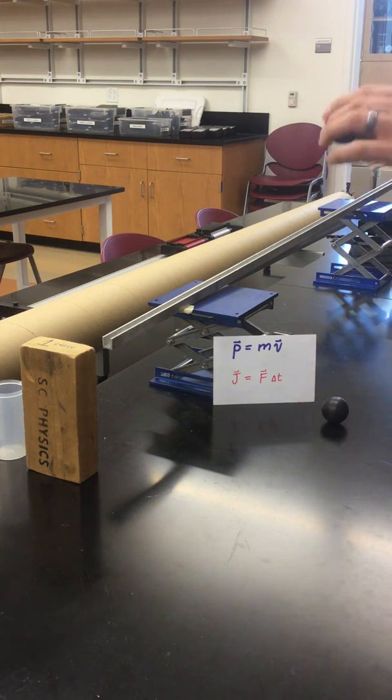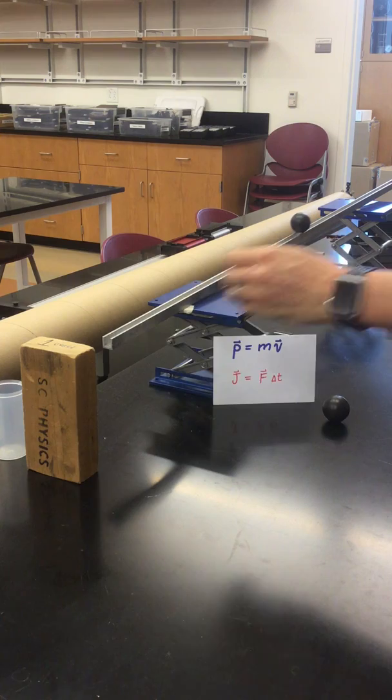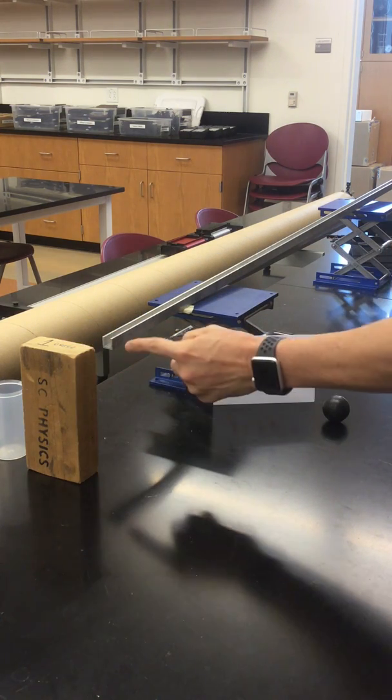Now if I roll the sad ball down this ramp, it's going to convert some amount of gravitational potential energy into kinetic energy by the time it reaches the bottom.